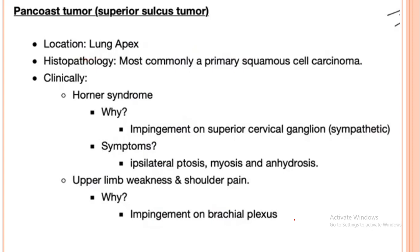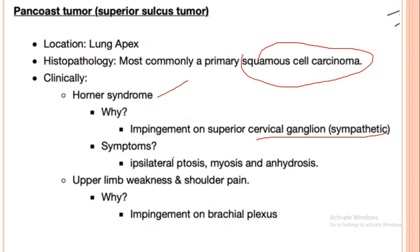For the Pancoast tumor, located on the superior sulcus at the lung apex, the type of cancer is squamous cell cancer. It causes Horner syndrome due to impingement of the cervical ganglion. The symptoms of Horner syndrome are ptosis — the eye cannot open fully — miosis, and anhidrosis. The patient may also develop weakness of the shoulder and upper limb, and shoulder pain due to impingement of the brachial plexus by the Pancoast tumor.